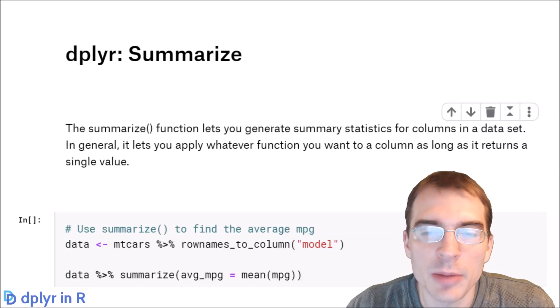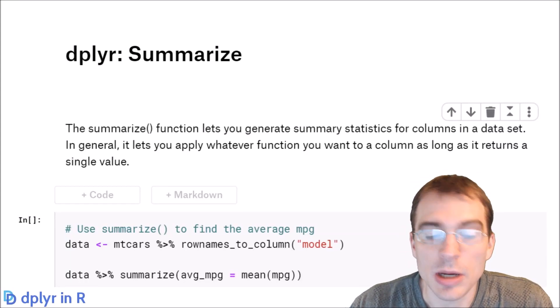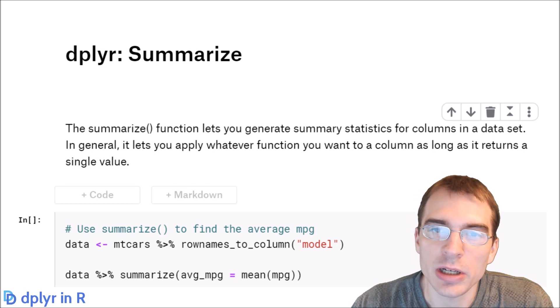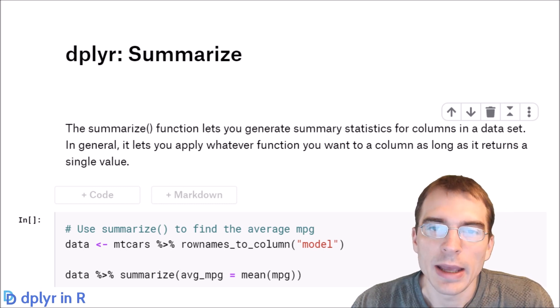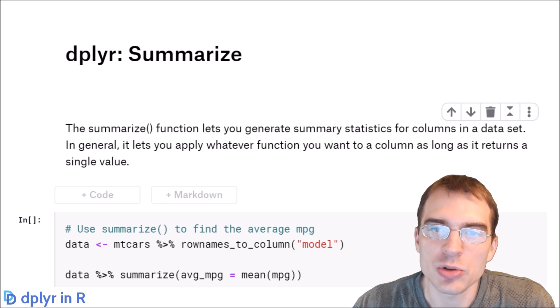In the dplyr library, you can use the summarize function to generate summary statistics for columns in your data set. In general, summarize lets you apply any function to a column as long as it returns a single value. So we'll just show how to do some different summaries in this lesson.